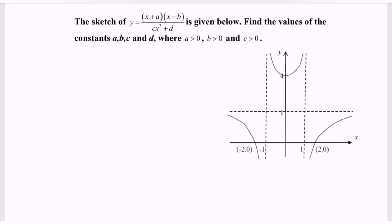Hello everyone, welcome to my channel. Given the situation where we have the sketch of function y equals to bracket x plus a, multiplied by x minus b, over cx squared plus d, which is given below where we have the function and the graph.